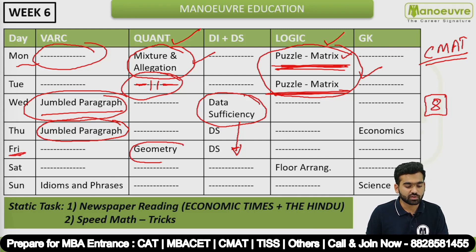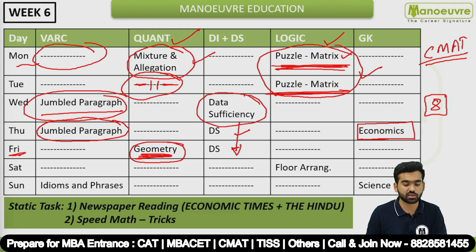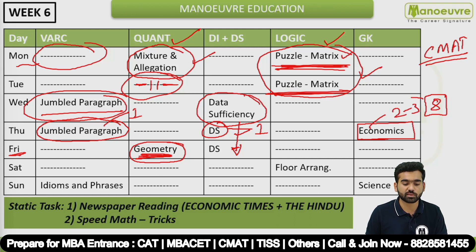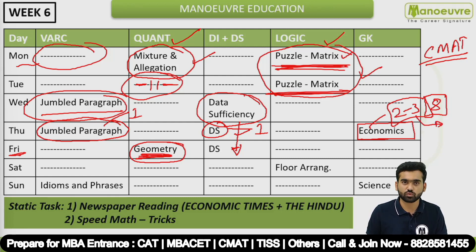On Friday, also work on Geometry. On Thursday, additionally read Economics. Since you have extra time after Data Sufficiency, devote one hour to para-jumbles, one hour to Data Sufficiency, and two to three hours to Economics. For Economics, just read the content two or three times — you can expect two to three questions from Economics in the exam.